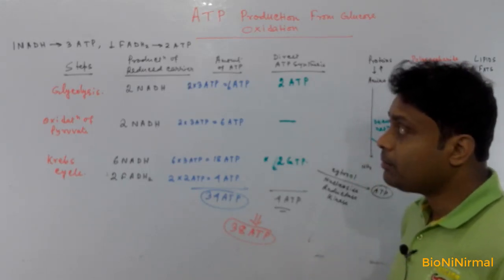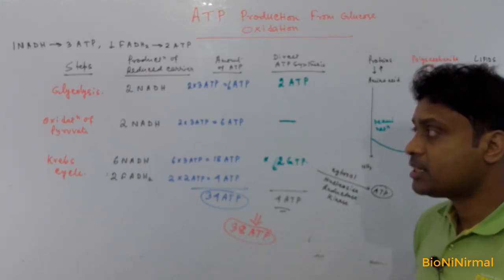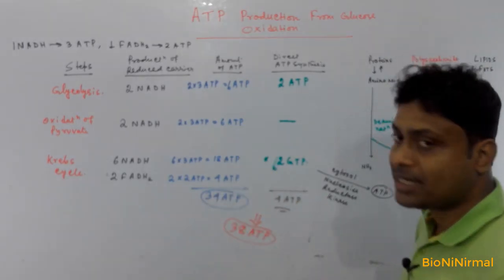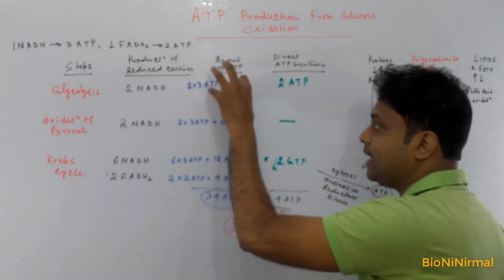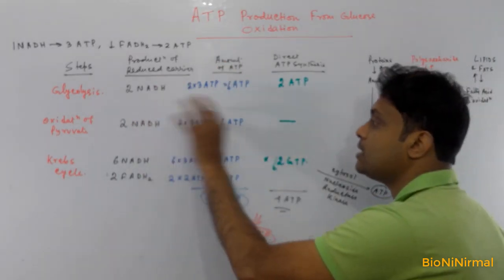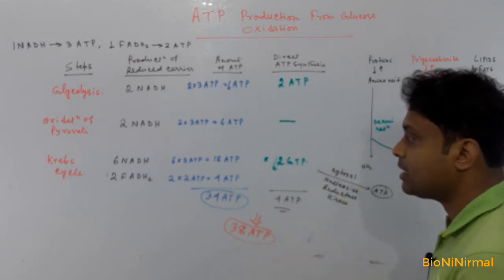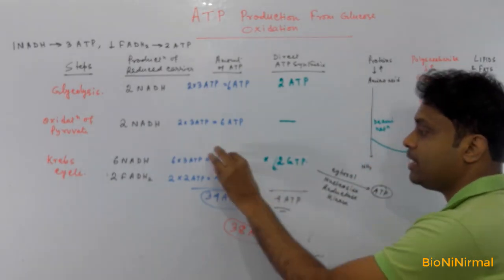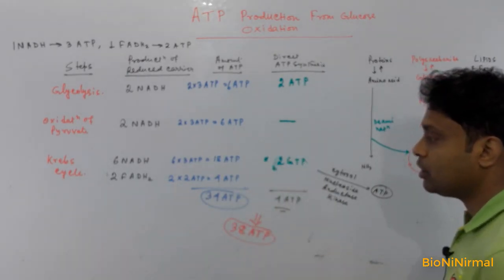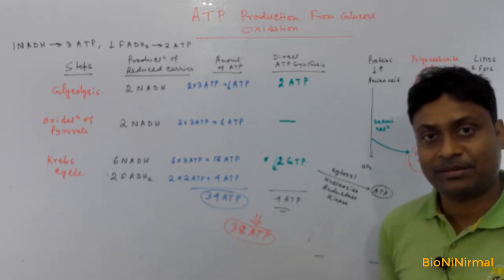In this video tutorial, you have learned how many ATP are produced in every step of glucose oxidation. By glycolysis, the net ATP production is 8. By oxidation of pyruvate, the net ATP production is 6 molecules of ATP. By the Krebs cycle, the net ATP production is 18 plus 4 plus 2 GTP, giving 24 molecules of ATP produced by the Krebs cycle.